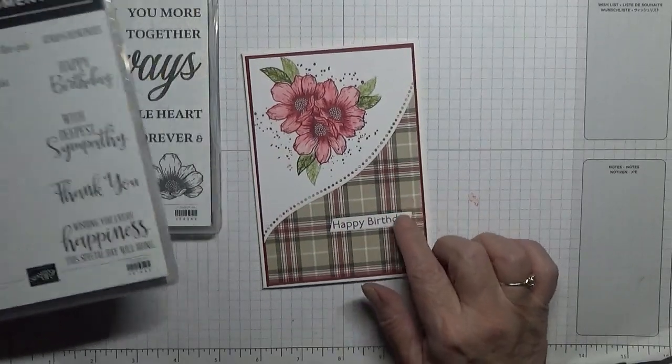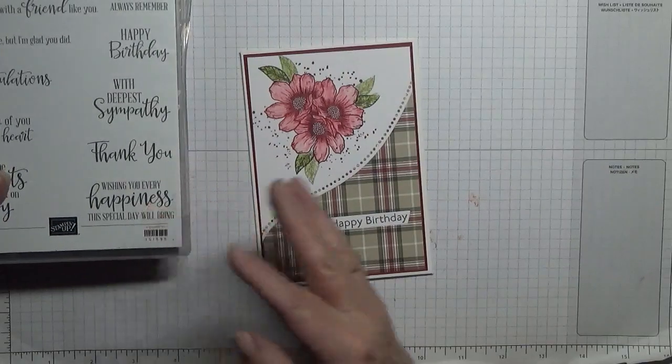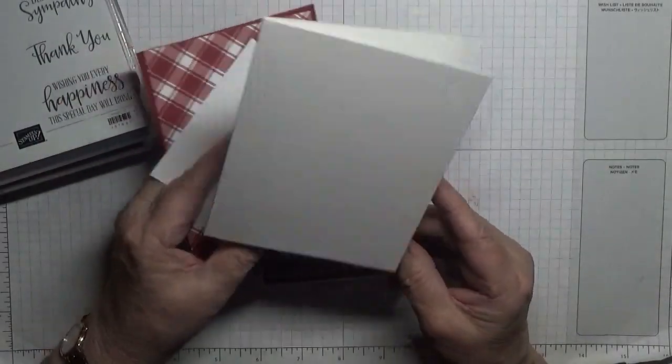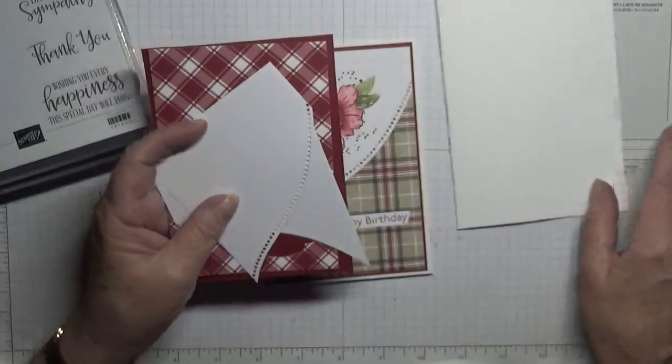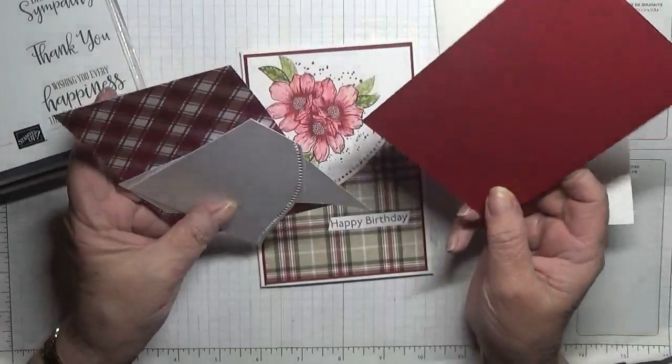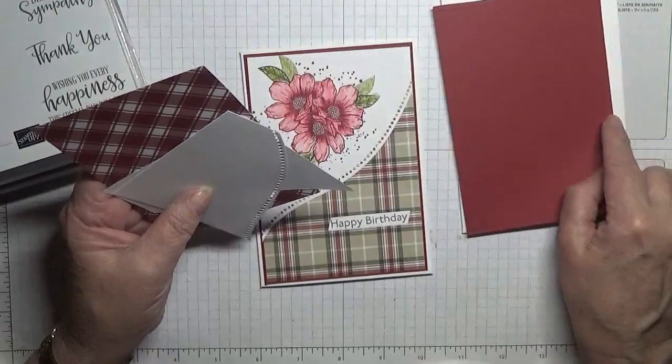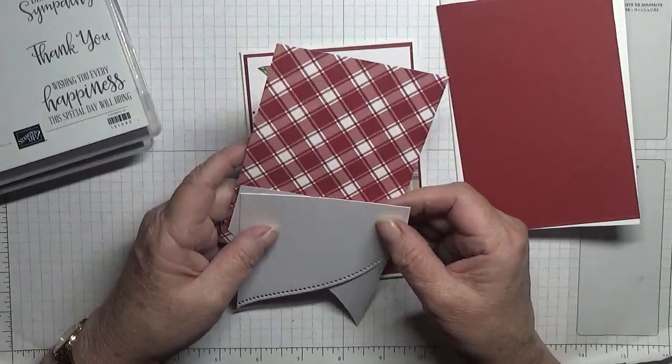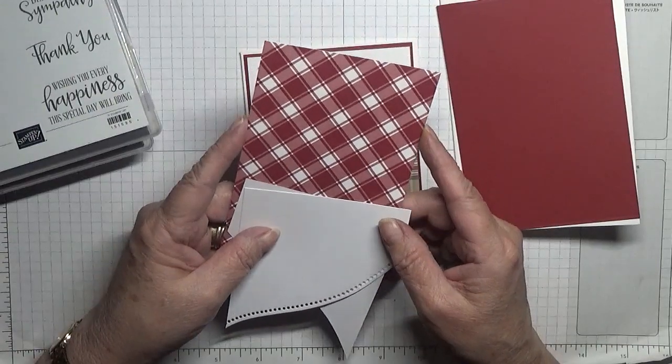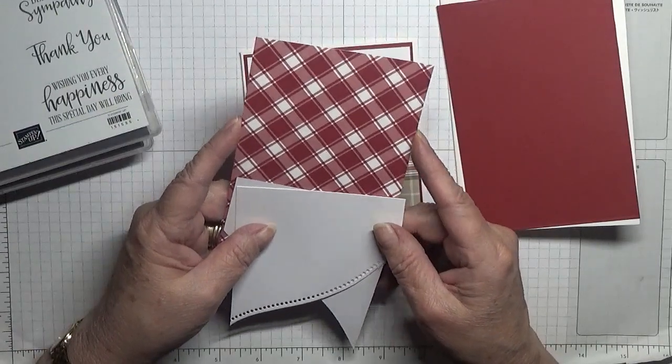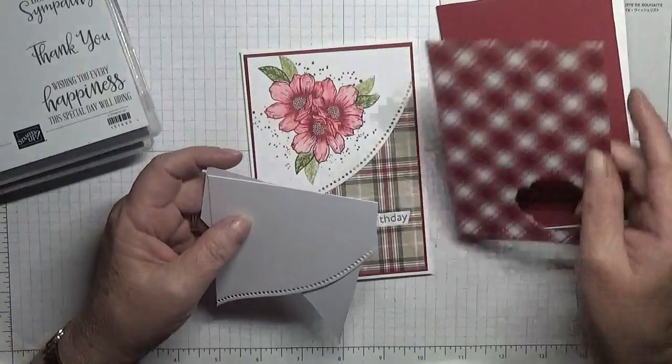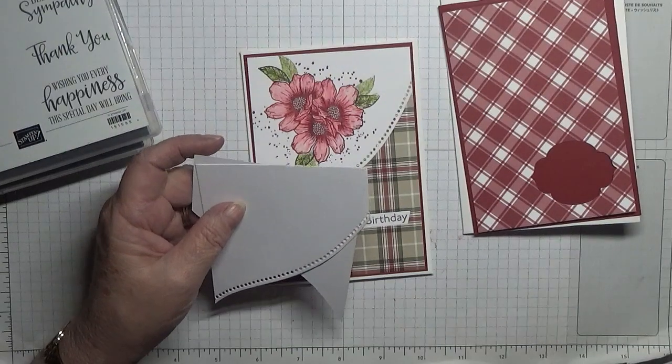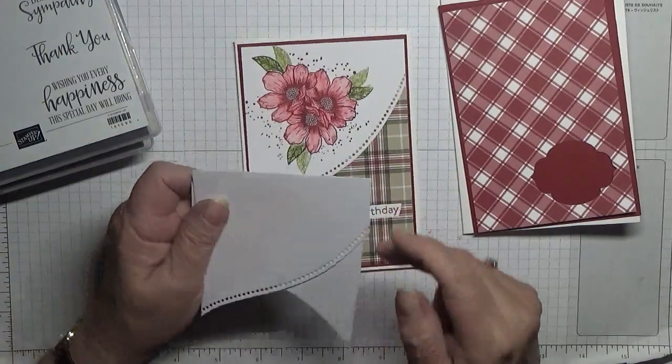The papers I've got: blank card base of eight and a quarter by five and seven eighths, scored at four and one eighth, folded in half. A piece of cherry cobbler at five and five eighths by three and seven eighths. A piece of the tartan plaid papers at three and five eighths by five and three eighths, and that will go there. As you notice there's a piece cut out, which is the new shape for this.